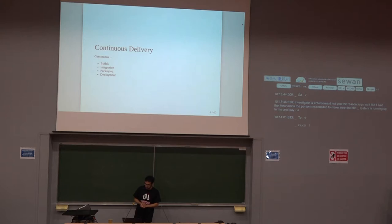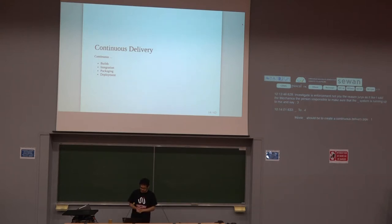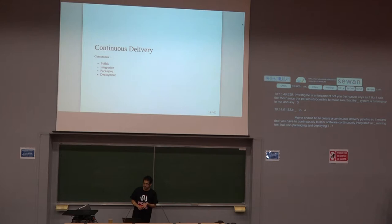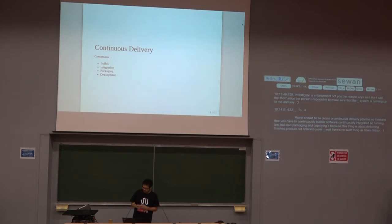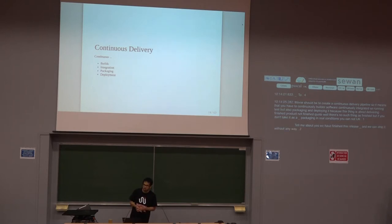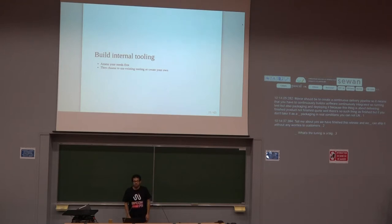Your goal should be to create a continuous delivery pipeline. That means continuously building the software, continuously integrating it — running tests, but also packaging it and deploying it. Release engineering is about delivering a finished product, not finished code. There is no such thing as finished code, but if you don't package it and test the packaging in real conditions, you cannot say firmly that you've finished the release and can ship it without worries to your customers. Tooling is also a big part of the job.